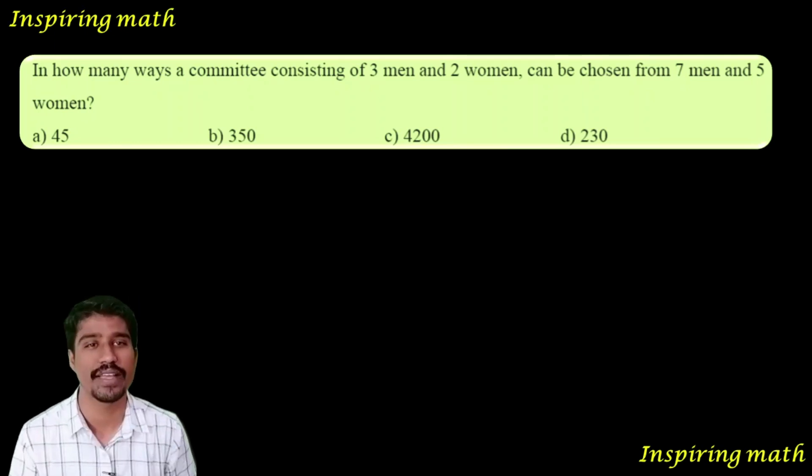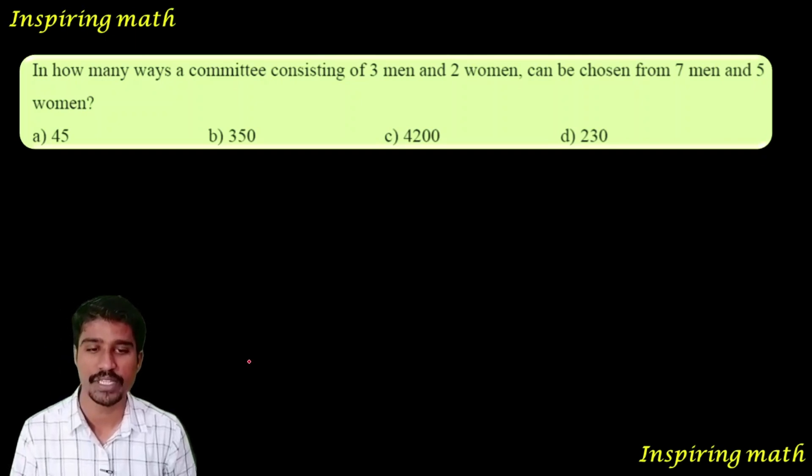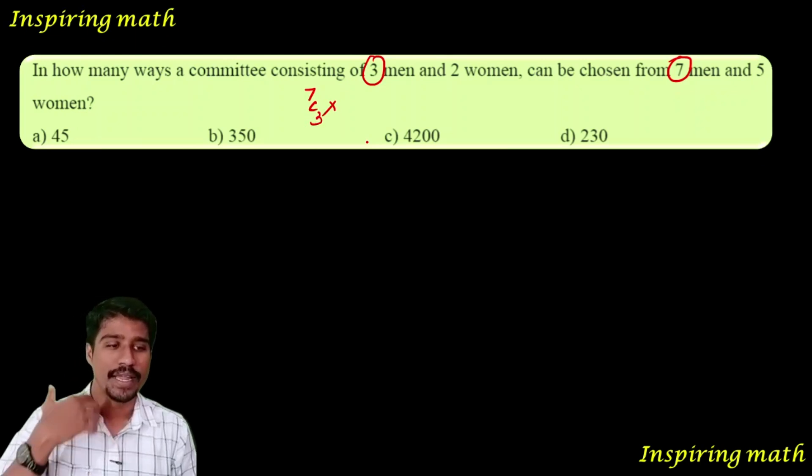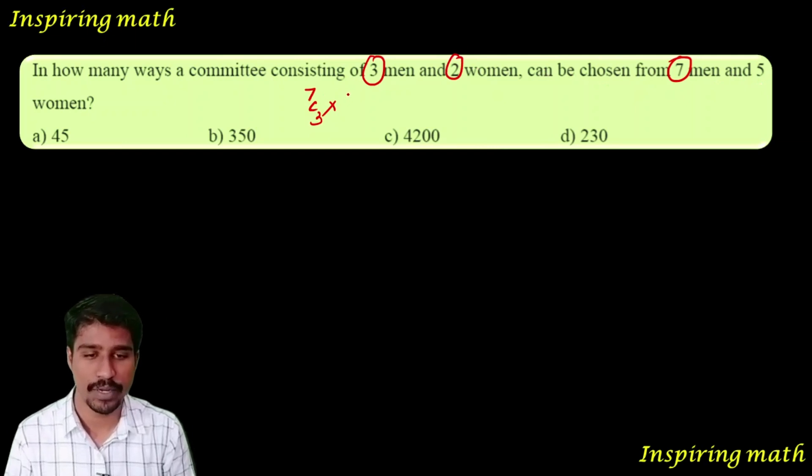In how many ways can a committee consisting of 3 men and 2 women be chosen from 7 men and 5 women? So, it can be done in 7C3 ways. Next, 2 women out of 5 women, it can be done in 5C2 ways.